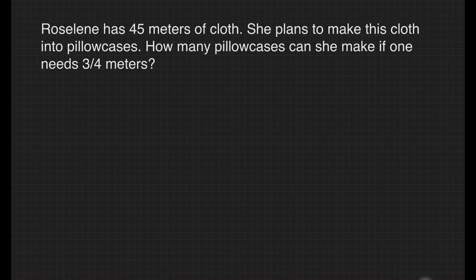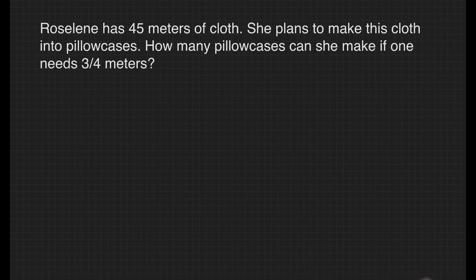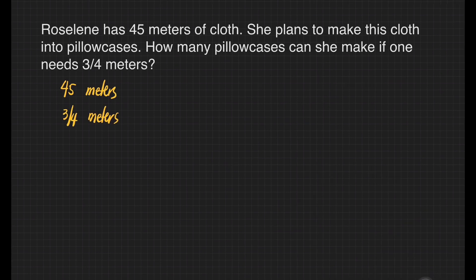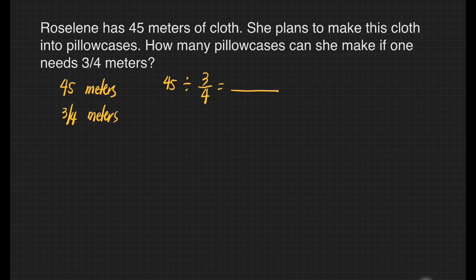We have a sample problem here. Roseline has 45 meters of cloth. She plans to make this cloth into pillowcases. How many pillowcases can she make if one needs 3/4 meters? Our given: 45 meters and 3/4 meters. Our division sentence is 45 divided by 3/4 is equal to the unknown length. 45 is our dividend, 3/4 is our divisor, and the answer is the quotient.